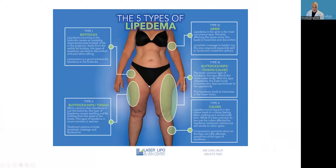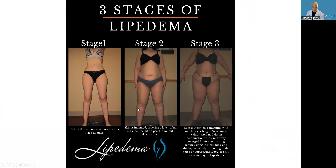There are five types of lipedema depending on location: type one is the hips, type two is the hips and thighs, type three is the whole legs, type four is the arms, and type five is just the calves. There are three stages: stage one is smooth, stage two has more dimpling, and stage three is where we see the lobules.